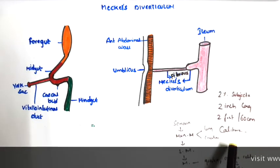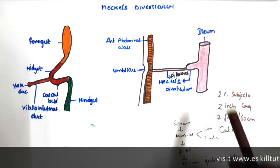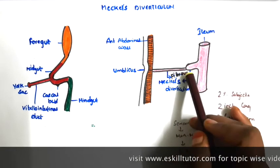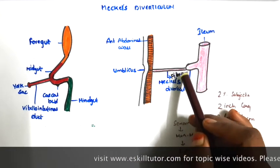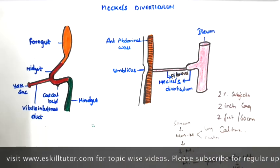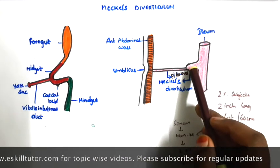Now we will see the clinical aspects of Meckel's Diverticulum. Some coils of the small intestine can encircle this fibrous band. Due to this encircling, intestinal obstruction can occur. This is a congenital anomaly.